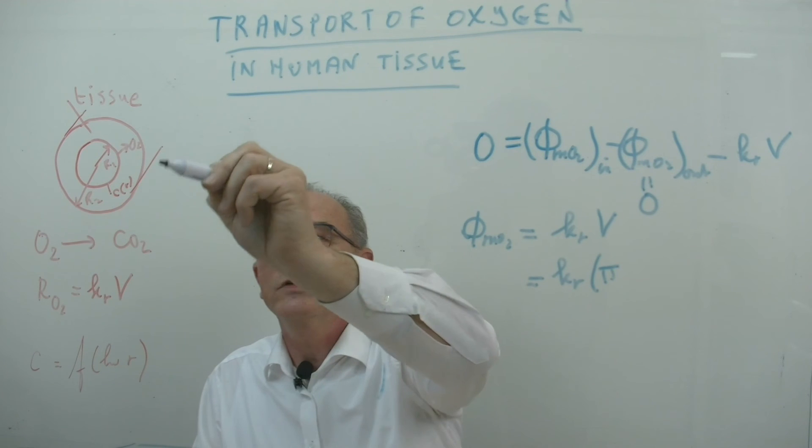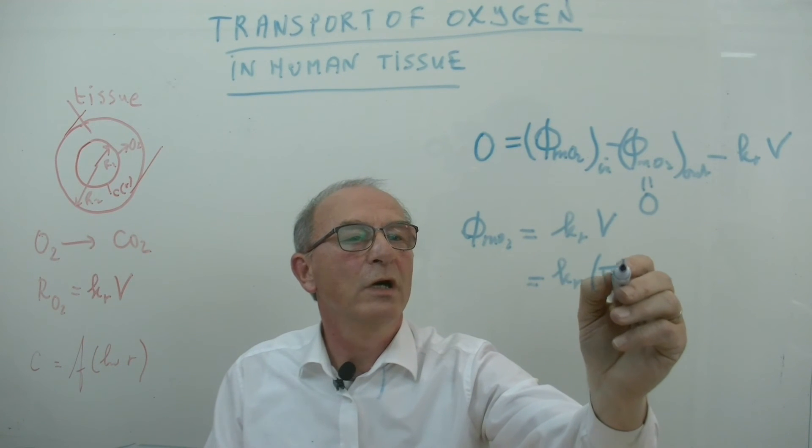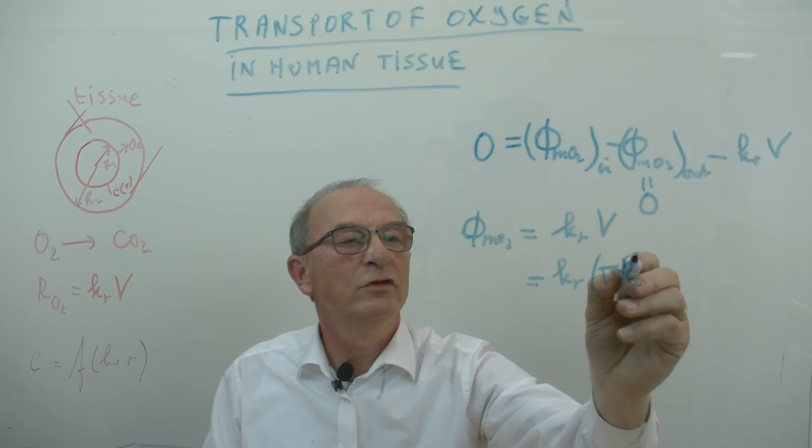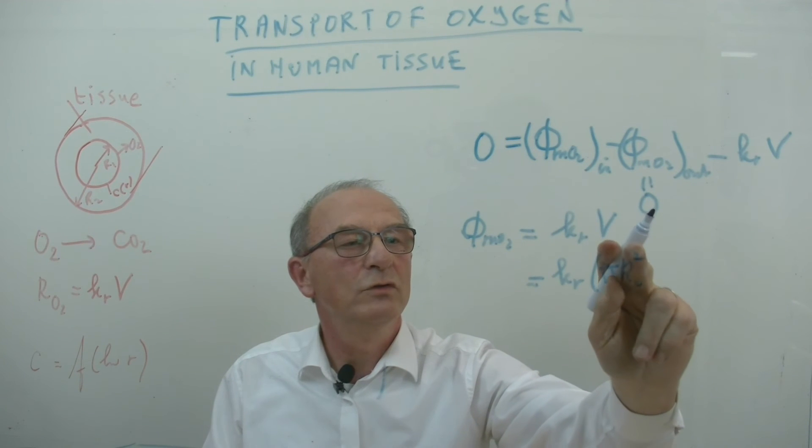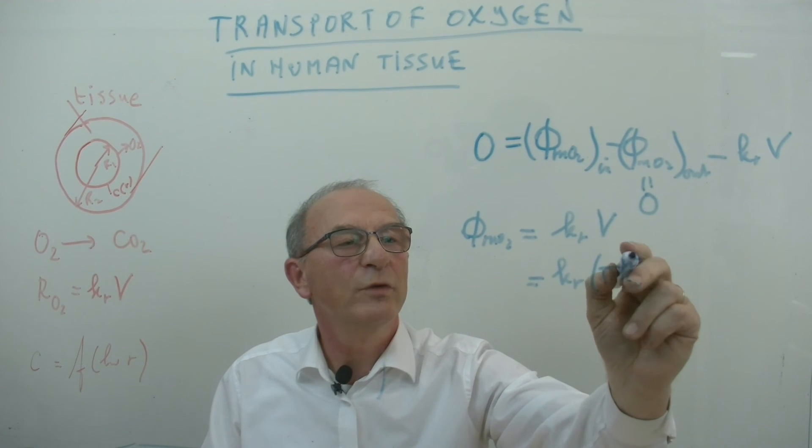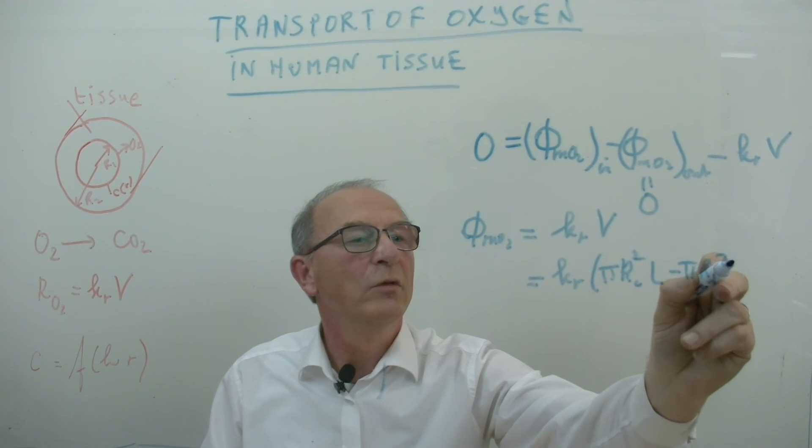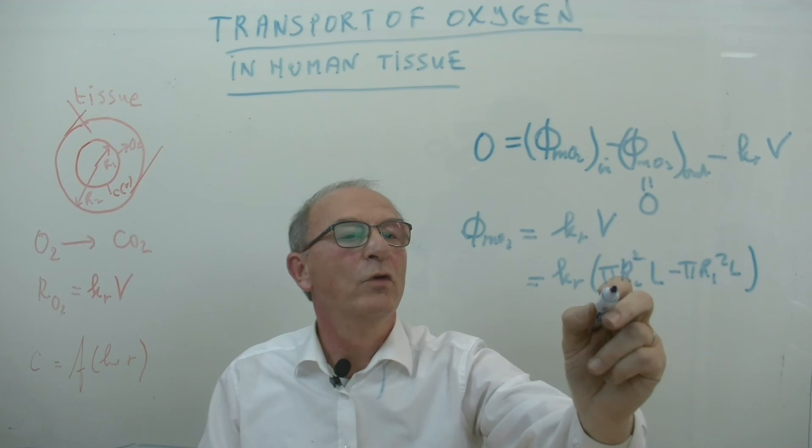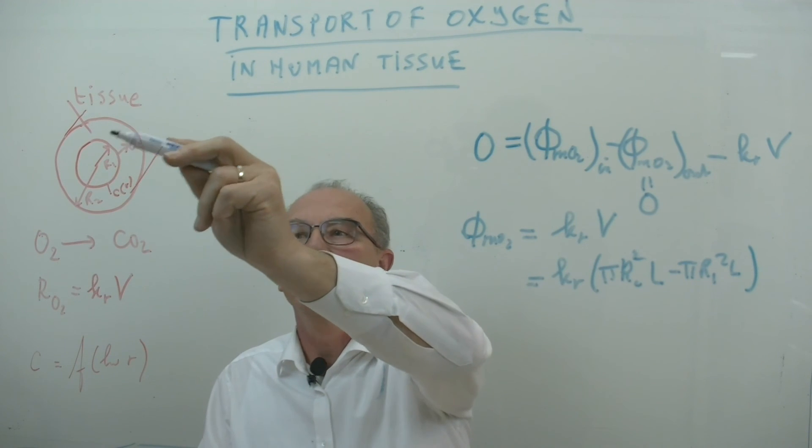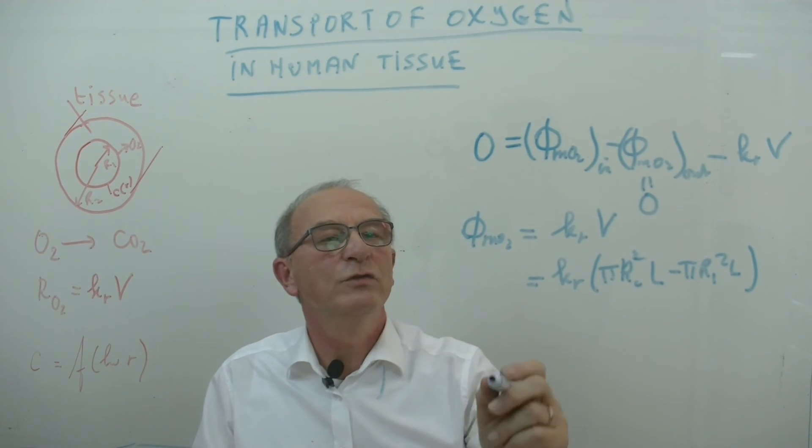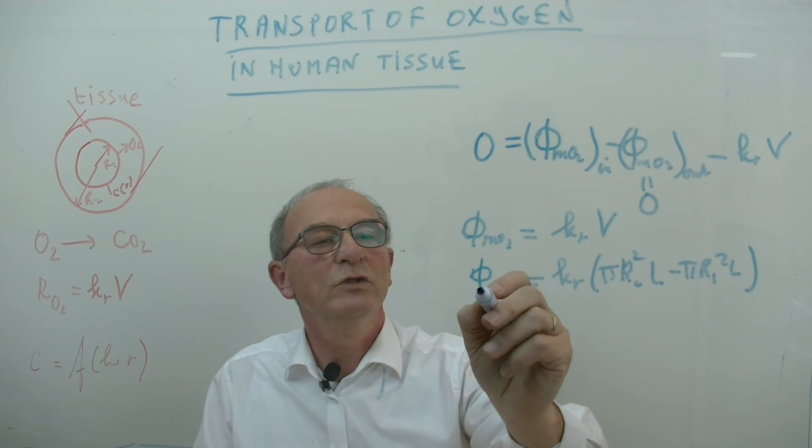Pi R2 squared multiplied by the length, minus pi R1 squared multiplied by length. So the outer volume minus the cylinder. Then we have the tissue volume. This is equal to the mass flow rate.